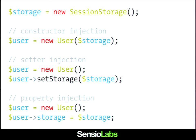Setter injection is also better when you have a very long list of dependencies for one object, instead of having tens of arguments for the constructor. But that probably means your object is doing too much — a good sign that you need to decouple your code more. It's also the only way to break circular references: if object A depends on object B and B depends on A, you cannot use constructor injection, so you use setter injection. But that's a very edge case. Most of the time, constructor injection is the way to go.